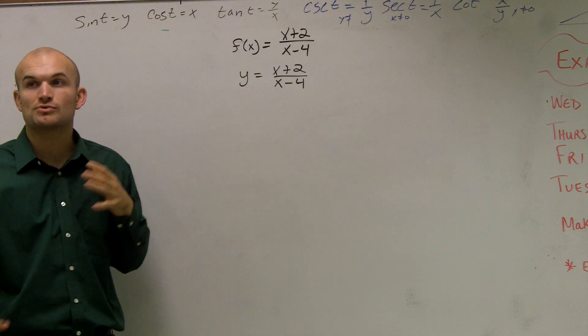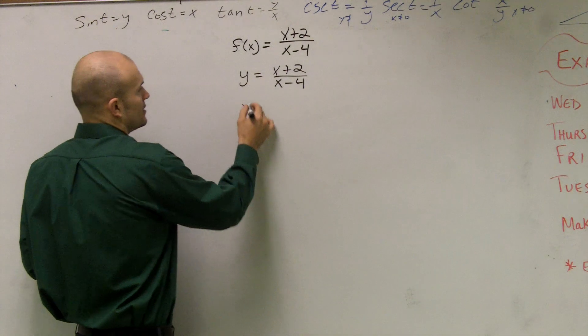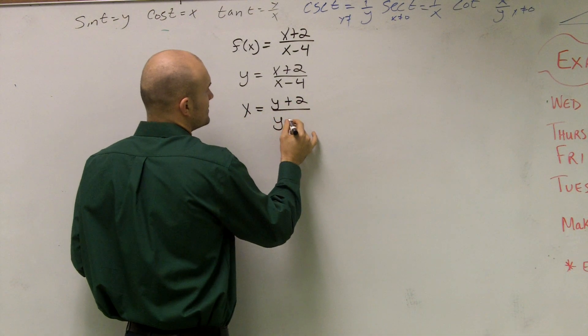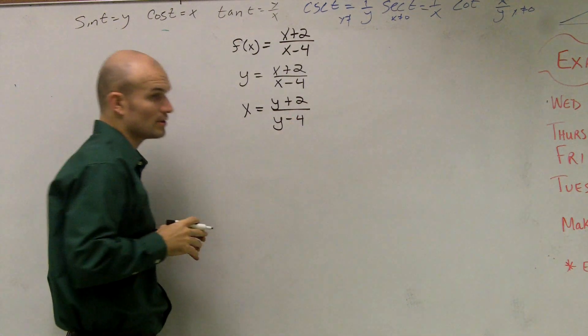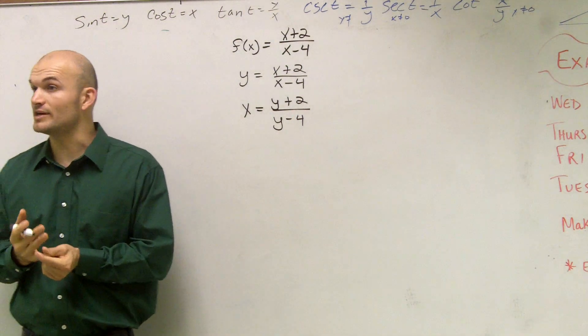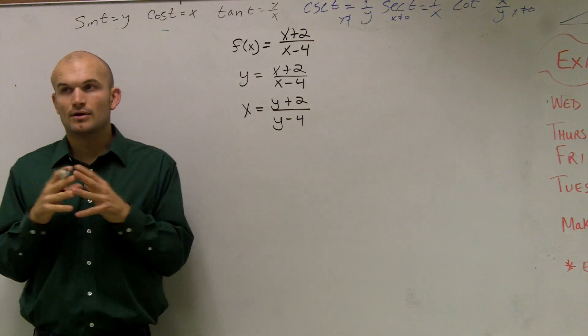Then the next thing is now we need to swap our x and our y's. So I have x equals y plus 2 divided by y minus 4. So now we have to solve for y. And I know it looks very difficult because we have two y's now.